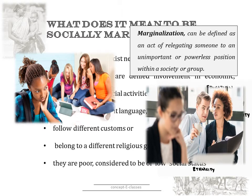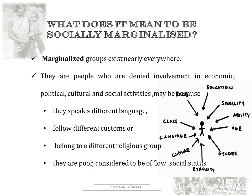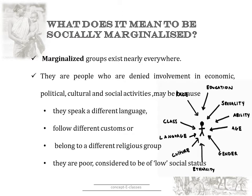Similarly, in workplaces or when you do a job, you may be excluded for certain reasons. Such a situation where a group of people are forced to live on the sidelines rather than the mainstream is termed as marginalization. This marginalized group exists nearly everywhere — they are people who are denied involvement in economic, political and cultural social activities. They are marginalized because they might speak a different language, follow different customs, belong to a different religious group, or be considered of low social status because they are poor.